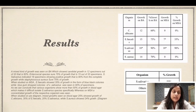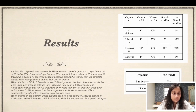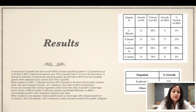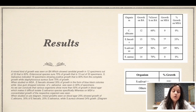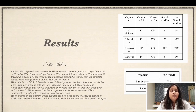12 out of 20 samples showed growth of Candida albicans, that is 60% of the total growth on blood agar, while on MSA, 0% of samples showed growth. E. faecalis had 15 samples out of 20, that is 75% growth on blood agar, while on MSA only 7 samples out of 20 showed growth, that is 35%. On MSA, blue-black colonies of E. faecalis were seen.